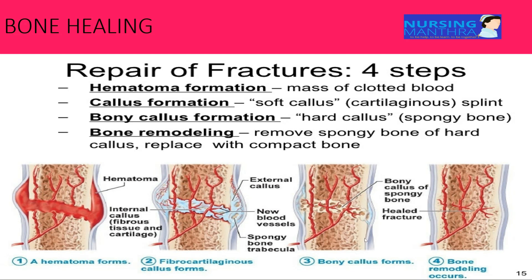The next stage is the late remodeling stage. Fracture healing is completed during the remodeling stage, in which the healing bone is restored to its original shape, structure, and mechanical strength. In summary: first hematoma formation occurs, then granulation tissue forms, then fibrocartilaginous callus formation, then bony callus formation, and finally remodeling occurs restoring the bone to its previous state. These are the four steps for fracture healing.